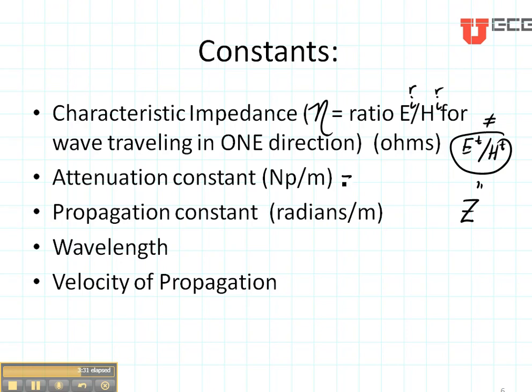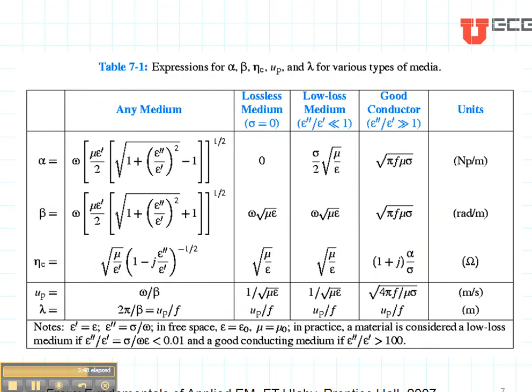The other constant that we need is alpha, which is the attenuation constant given in nepers per meter, the propagation constant beta, which is given in radians per meter, the wavelength, which is given in meters, and the velocity of propagation given in meters per second.